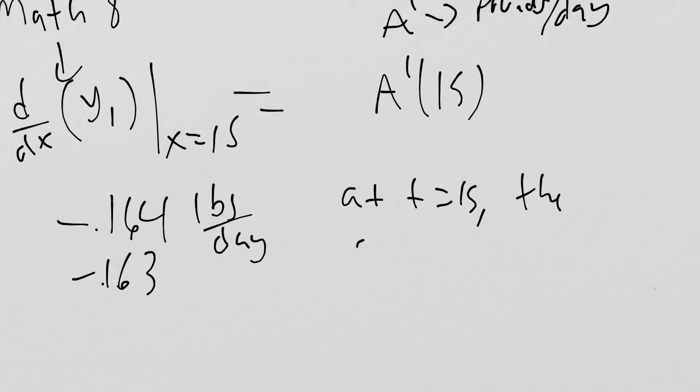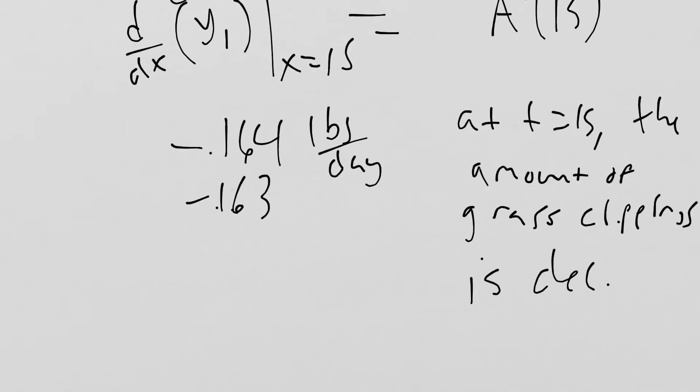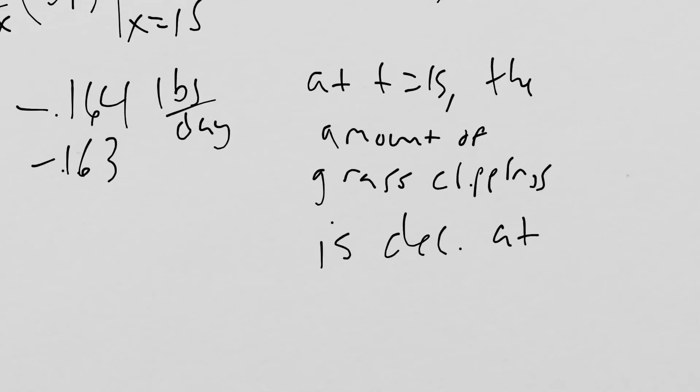What we say then is at t equals 15, the amount of grass clippings is decreasing—decreasing because our derivative is negative—at 0.164 pounds every day. That's the instantaneous rate of change of the amount of clippings in the bin.